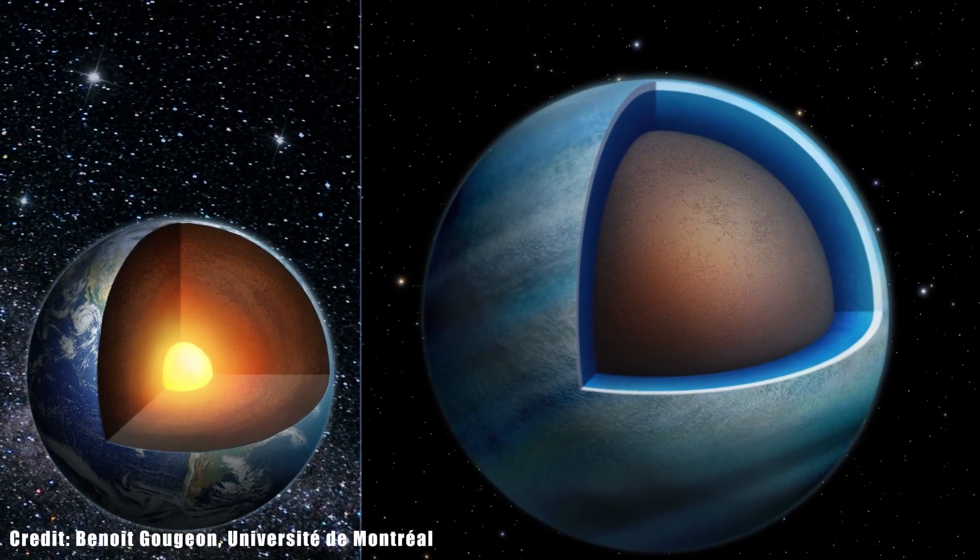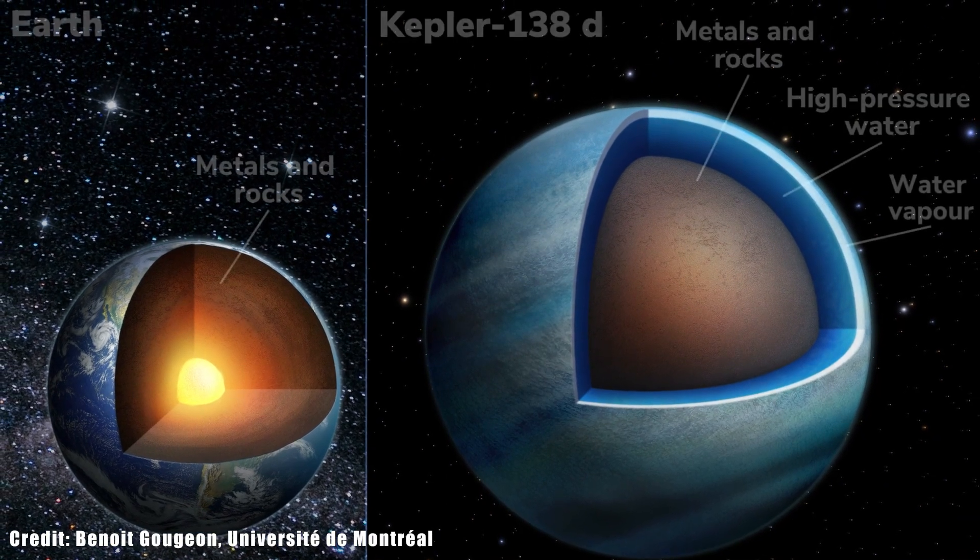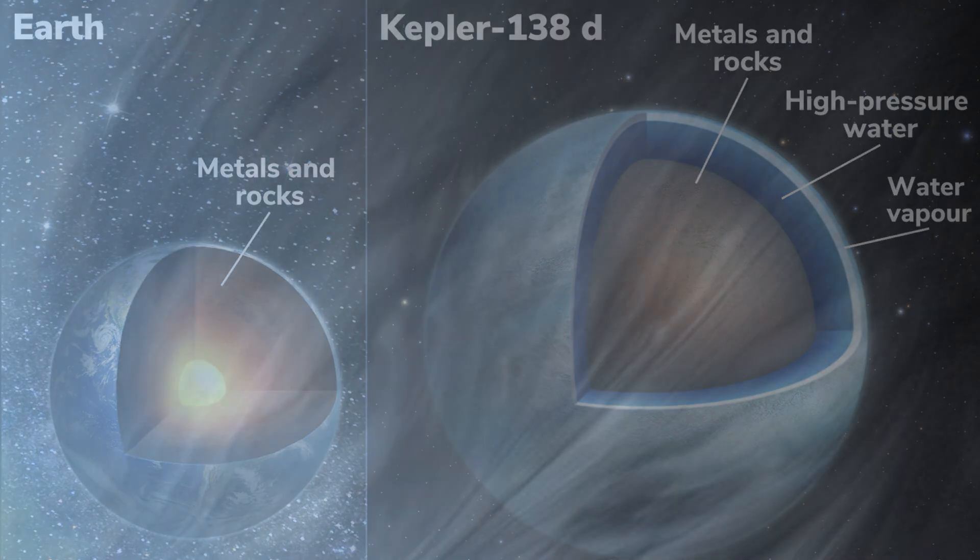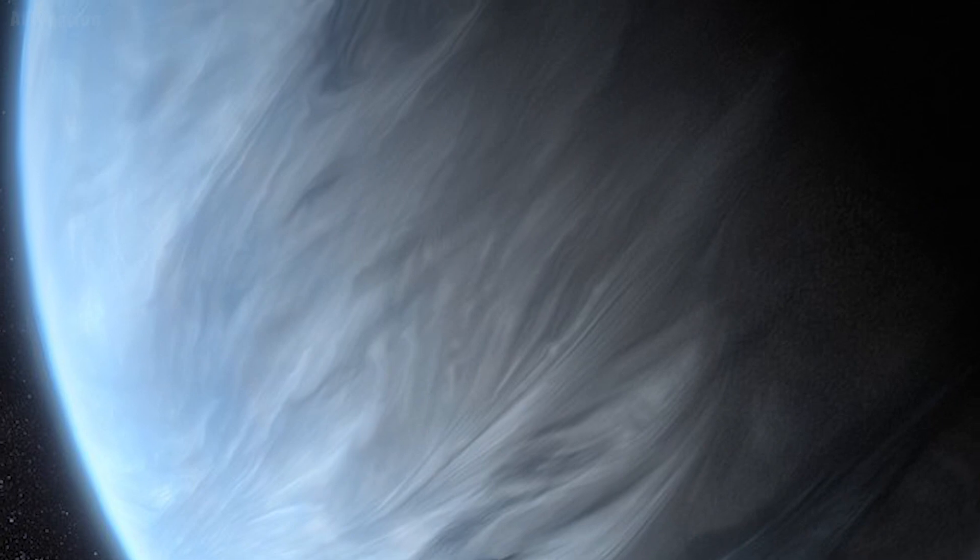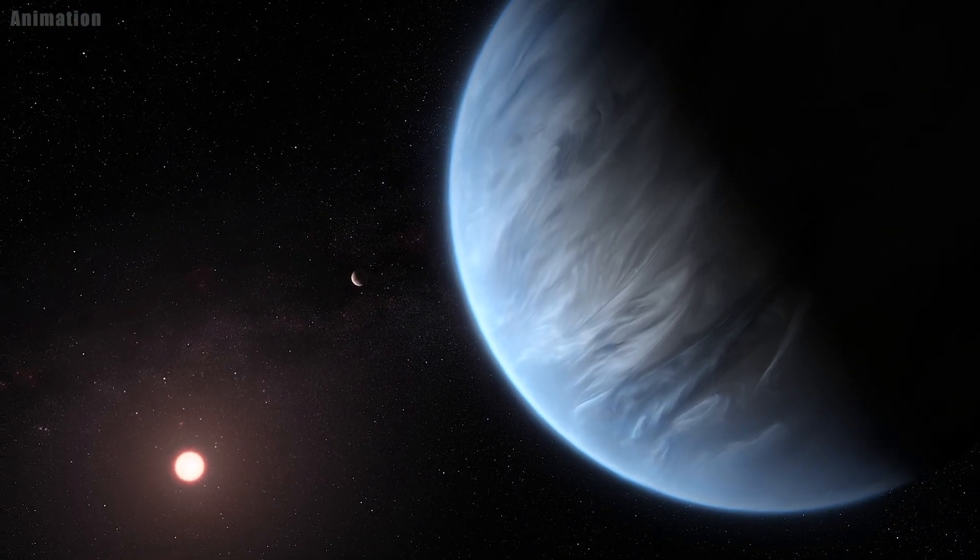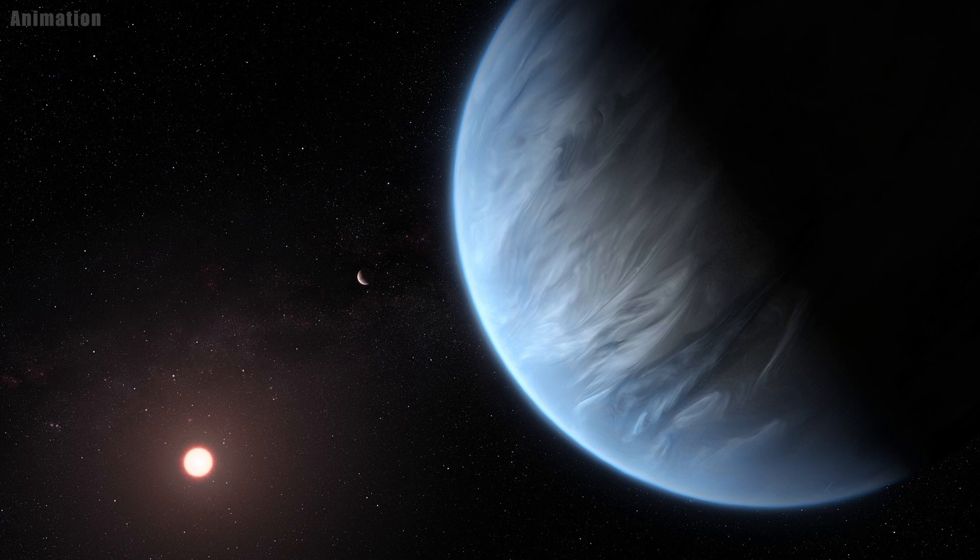Researchers caution that the planets may not have surface oceans like on Earth. The temperature of one planet's atmosphere is likely above the boiling point of water. They expect a thick, dense atmosphere made of steam on this planet, but there could potentially be liquid water at high pressures below it.